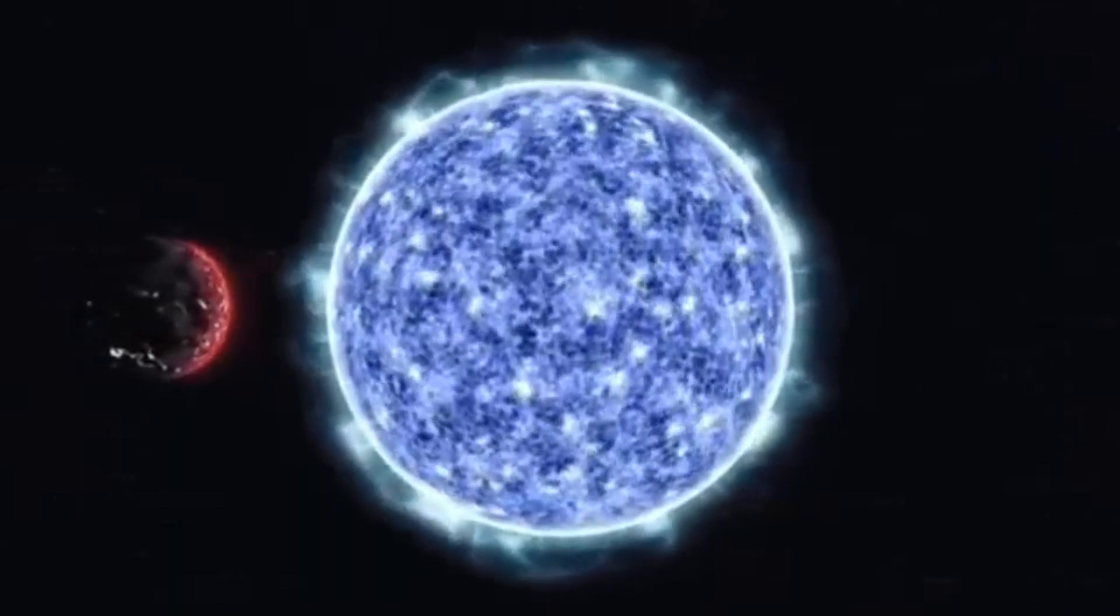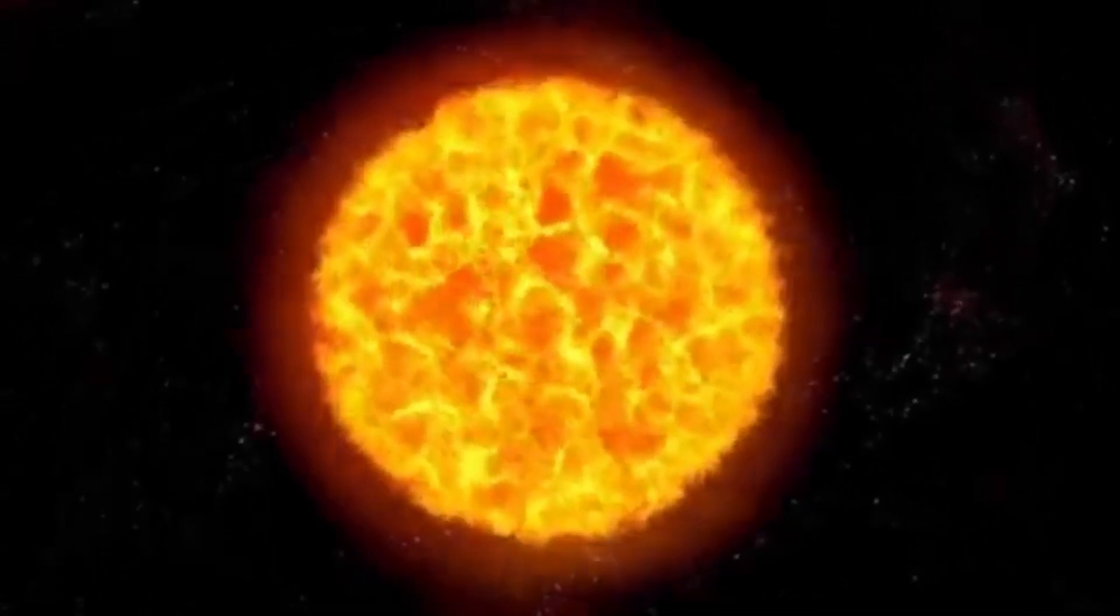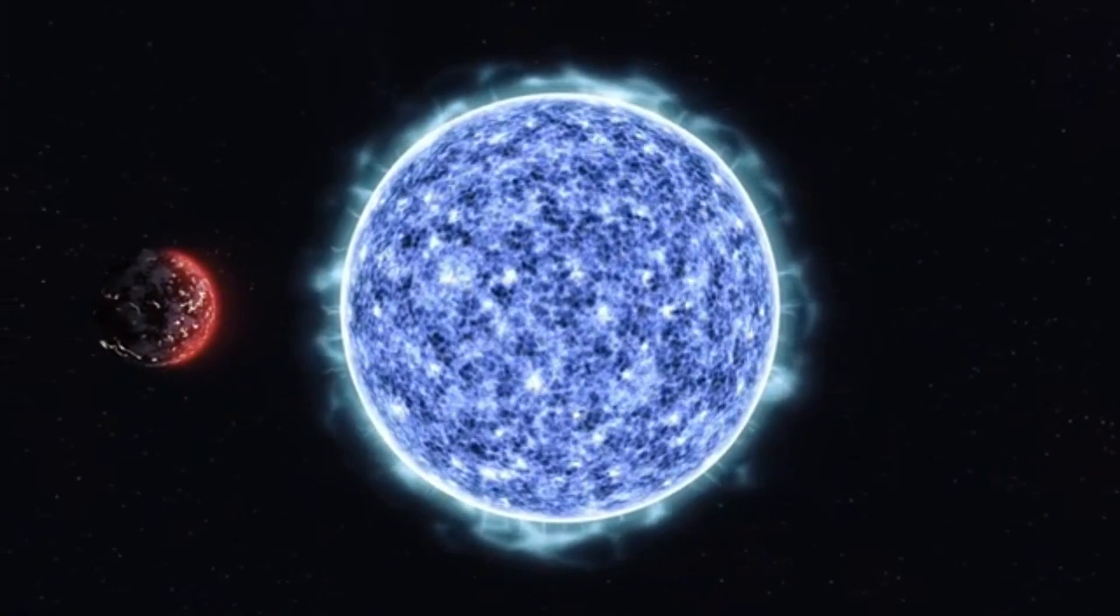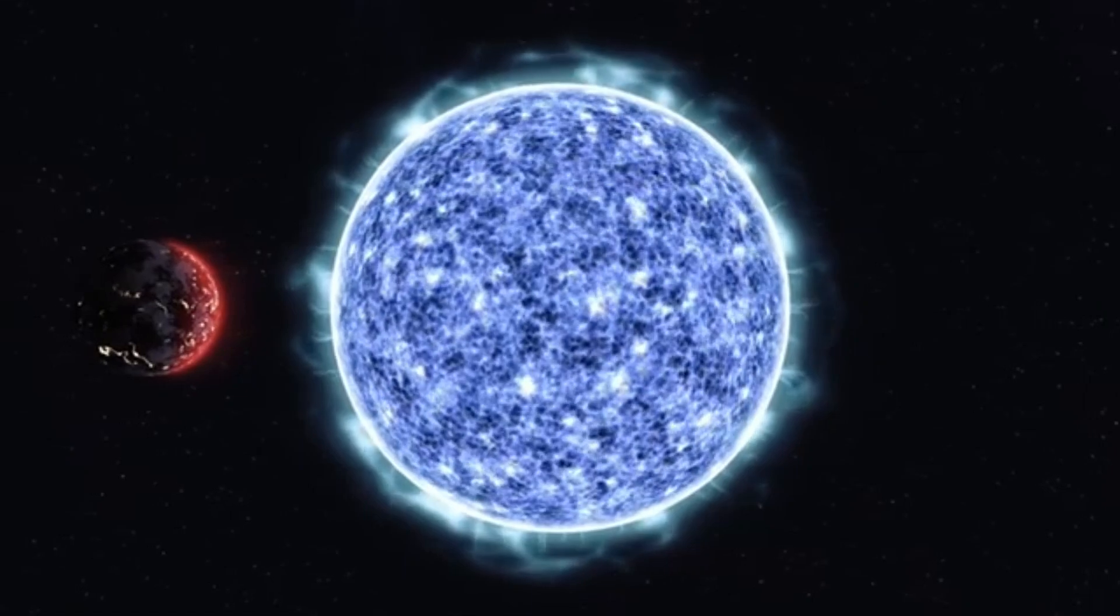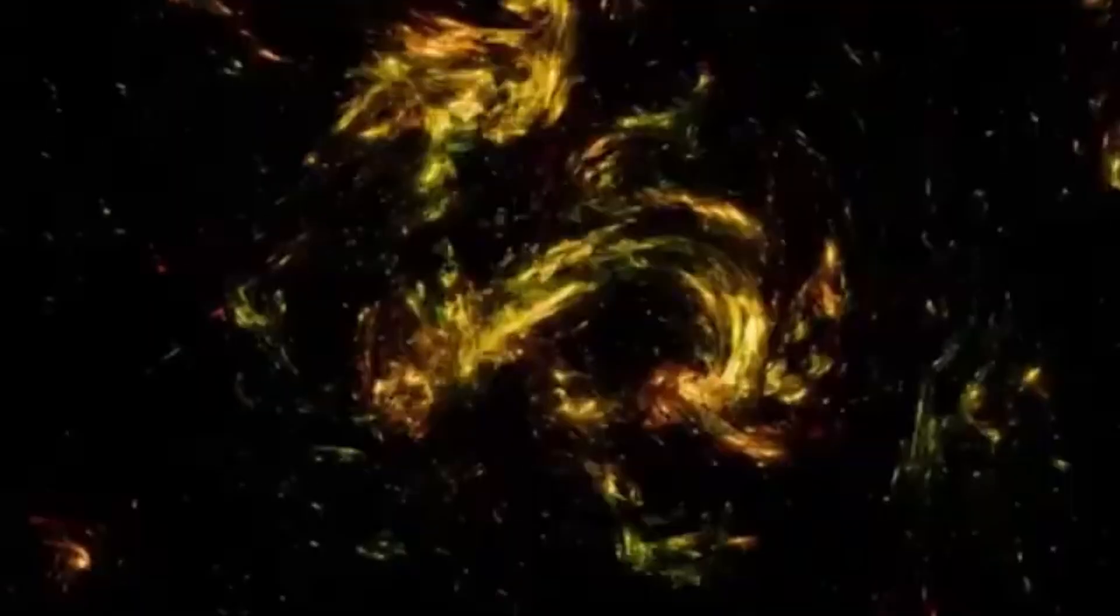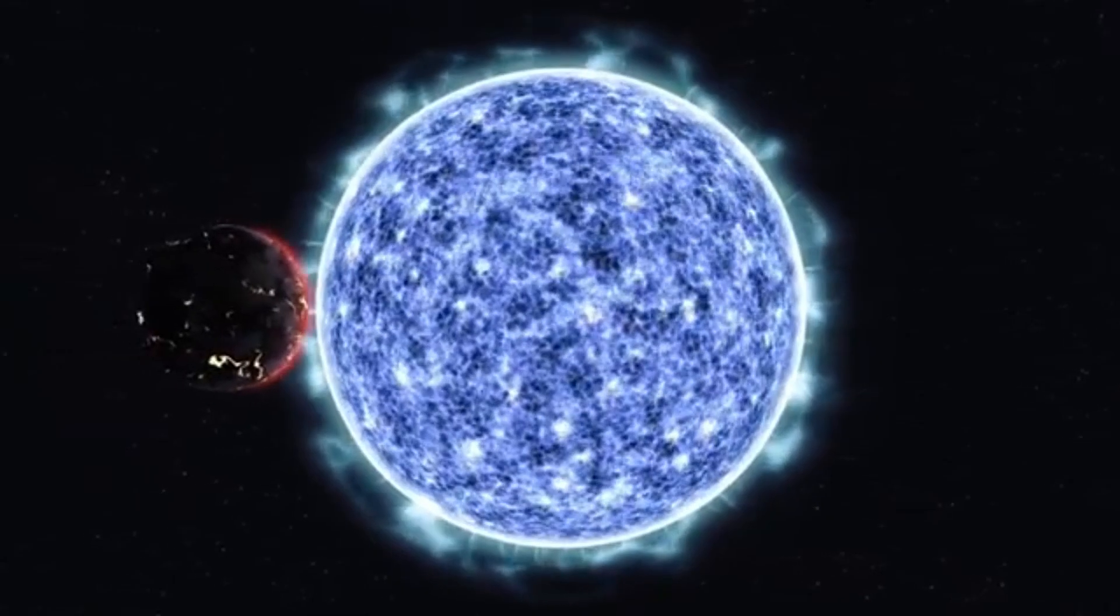Stars are cosmic furnaces powered by nuclear fusion. In their cores, they smash atoms together, turning lighter elements into heavier ones and releasing energy that makes them shine. Betelgeuse started life as a hot blue star, blazing with youthful vigor. Over millions of years, it grew cooler and larger, swelling into the red supergiant we see today. Its surface now glows at about 3,500 Kelvin compared to our sun's 5,500 Kelvin, giving it that distinctive red hue. But inside, the real drama is unfolding.